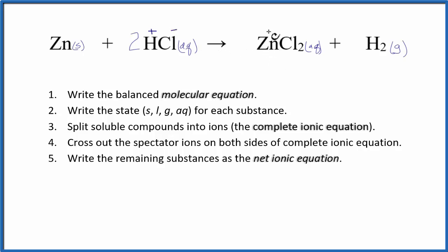Zinc is a transition metal, but it's a bit of an exception—it's always 2 plus. The chloride ion, we said that's a 1 minus. H2 doesn't dissociate, so we leave that as H2.